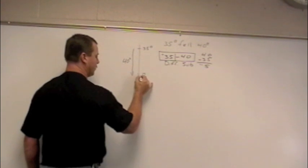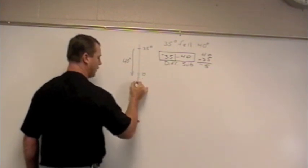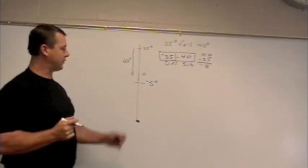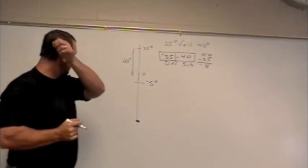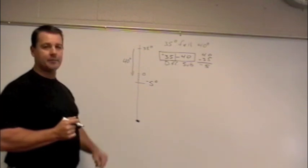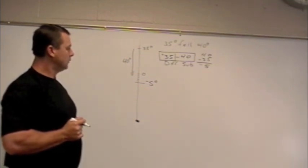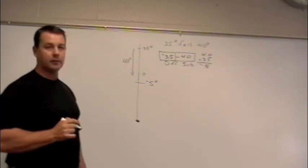So there's negative 1, 2, 3, 4, 5. So my new temperature after it fell 40 degrees from earlier in the day would be negative 5. All right, hopefully this is, you'll find this helpful, thank you.